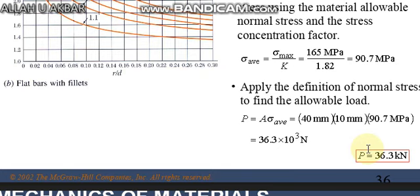The definition of average stress equals force by area. In order to find P, we have area times average stress. Thickness is given and diameter is given: 40 times 10 times sigma average 90.7 megapascals.